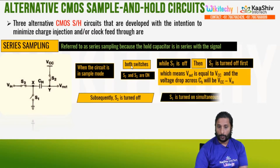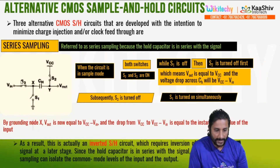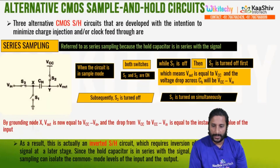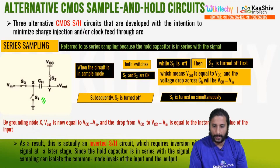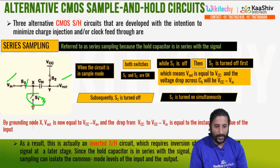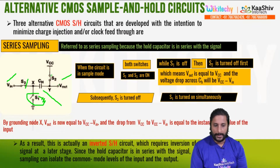In sample mode, both switches S2 and S3 are on. S2 is turned off first. V-out is on and V-out equals V-in. The process is done. The voltage drop across CH will be VCC minus V-in. S3 is then turned off, and S1 is turned on simultaneously.